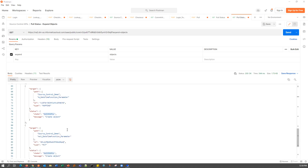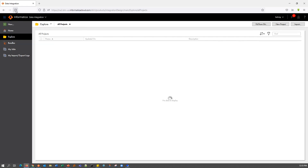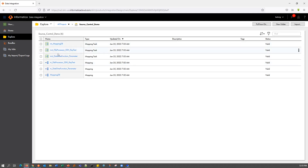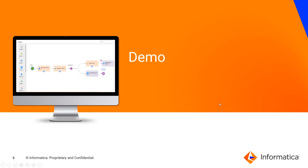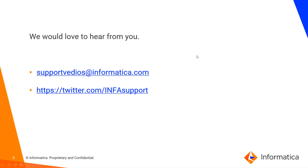To validate this pull, let's go to our test organization and do a refresh. We are expecting a new project to have been created. The source control demo project has been created, and going into it we can see all of our six assets that have been created as well. This shows us that the pull operation was also successful. That brings us to the end of our demo. We have looked into all six APIs that IICS offers to perform the various Source Control operations. There are reference links and KB articles available in the description for your reference. We would love to hear from you — if you have any feedback, do let us know on the email address shown on screen or on Twitter. Thank you.